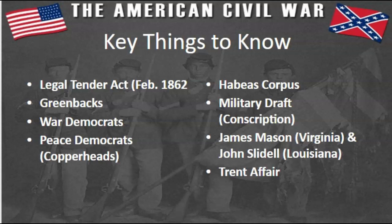Some other vocabulary to know from this section: the Legal Tender Act was passed by Congress in February 1862 and it created a national currency. Before that, different states had their own money. This allowed the government to issue money, and they issued green-colored paper money known as greenbacks. This takes place in the North.